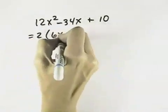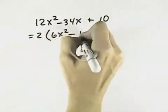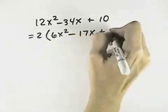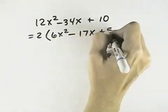If we divide 2 out of the first term, we get 6x squared. Out of the middle, we're left with 17x. And on the last term, we're left with 5.